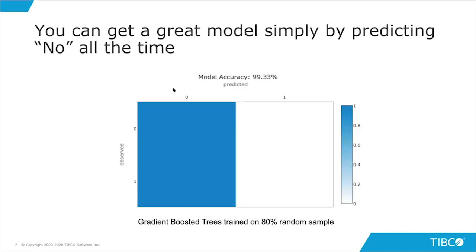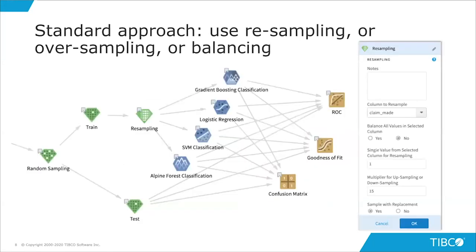Here's an illustration of the problem. I built a gradient boosted trees model on the original data — it shows 99.33% accuracy. But if you look at what it was actually doing, it just predicted zero — no claim — all the time. Given that 99% of events were negative, you get a pretty accurate model just by being dumb. The standard approach is resampling, specifically oversampling or upsampling.